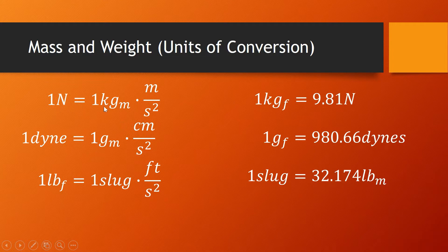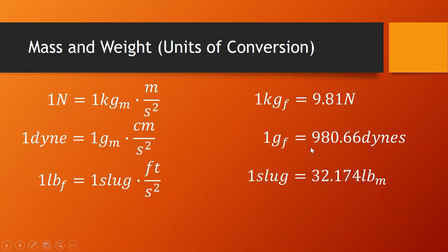1 newton is equivalent to 1 kilogram-mass times meters per second squared. 1 dyne is equal to 1 gram-mass times centimeter per second squared. 1 pound-force is equivalent to 1 slug times feet per second squared. 1 kilogram-force is 9.81 newtons. 1 gram-force is 980.66 dynes. And 1 slug is 32.174 pound-mass.